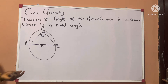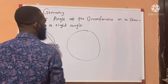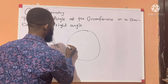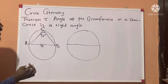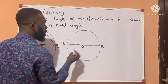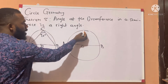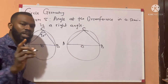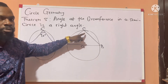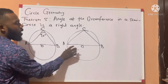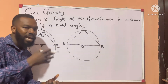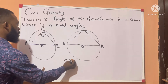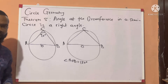Let us draw another circle to prove this. If this is another circle and we say this is the center of the circle, and then we have a line that passes through the center — we say this is line AOB, which is the diameter. And then we draw a chord down to point A, and then we draw another chord down to point B, and we call this point C. We want to show how this angle here is 90 degrees. Line AOB is a straight line, and angles on a straight line is 180 degrees. So angle AOB is equal to 180 degrees.